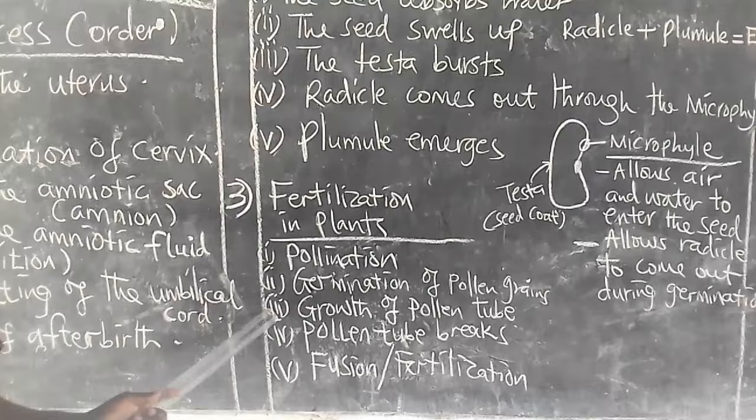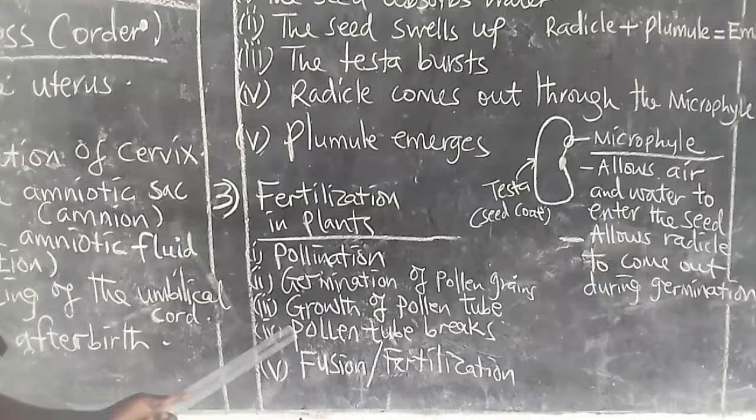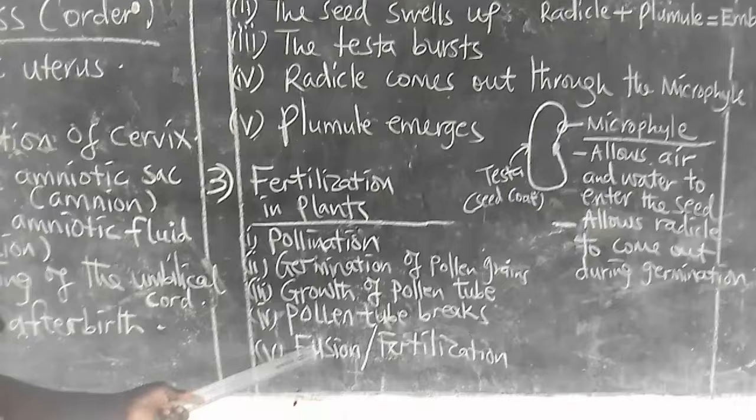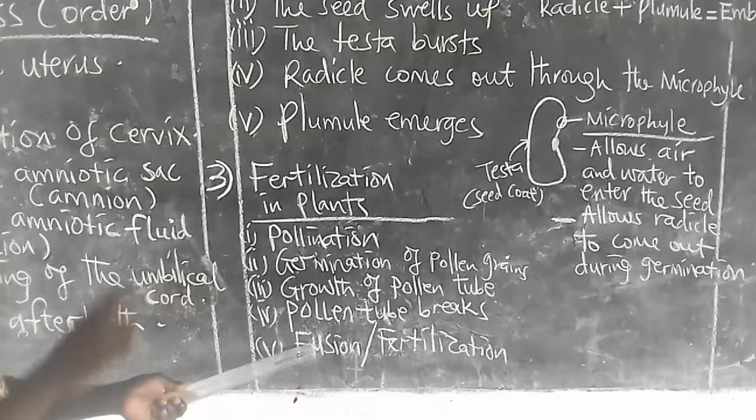Number three: growth of pollen tube, which occurs along the style. Number four: pollen tube breaks. Number five, the last one: fusion, which stops — that is fertilization. Fusion is the joining of the male and female sex cells of a plant, that is a combination of ovules and pollen grains, and this occurs in the ovary.